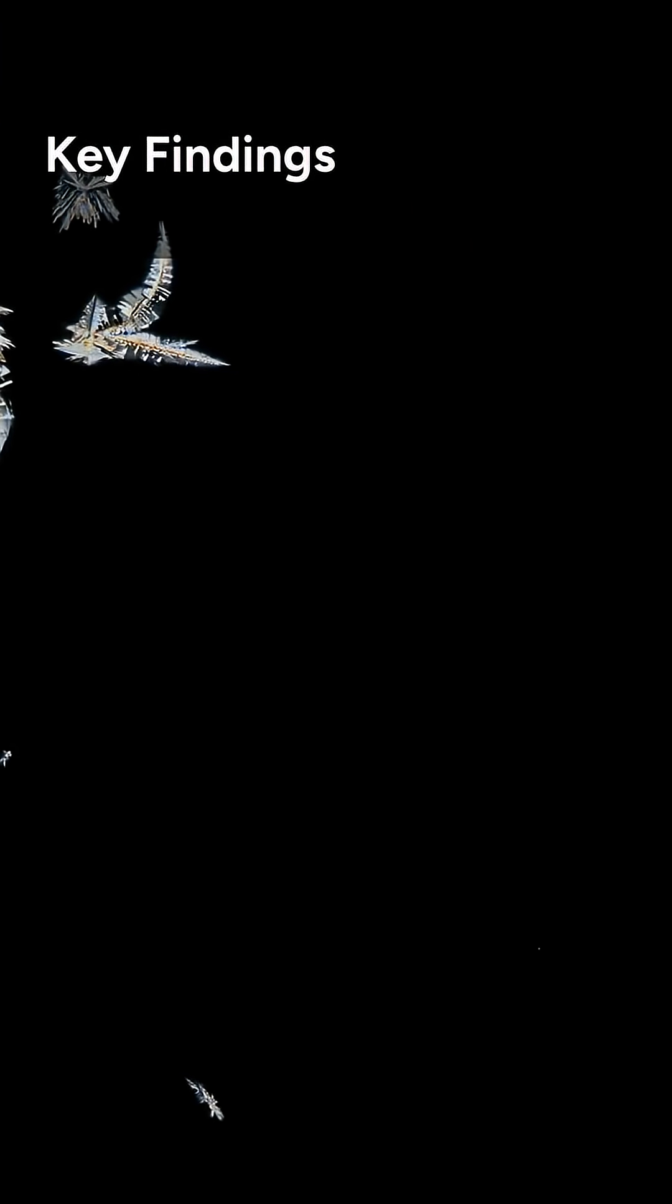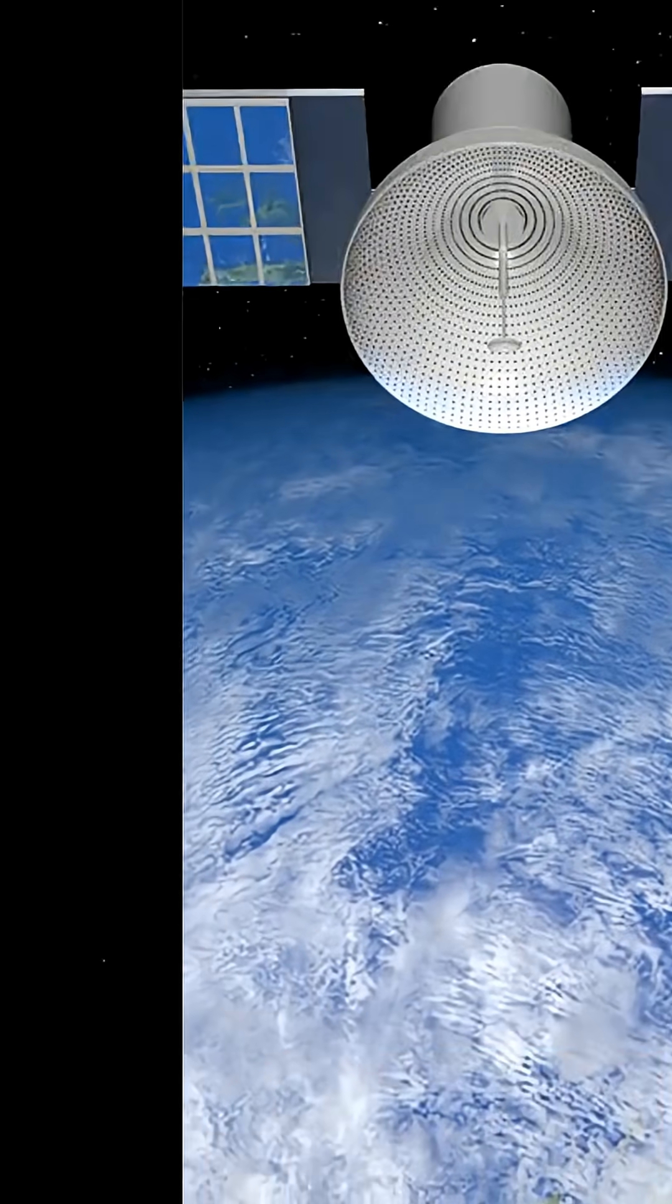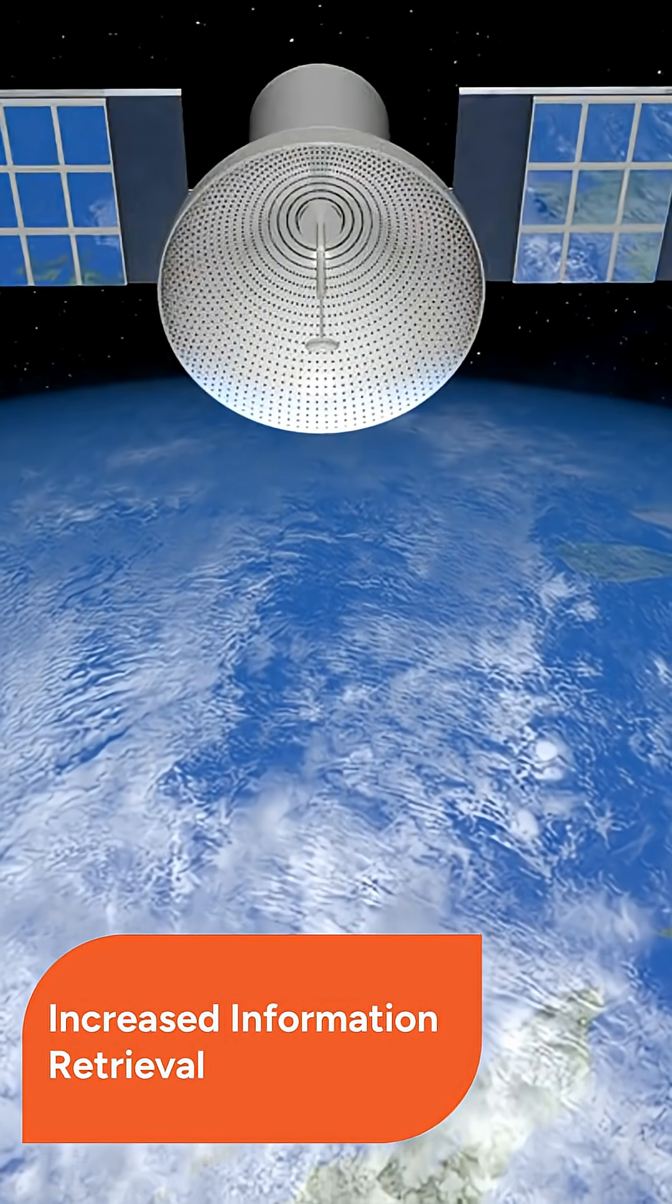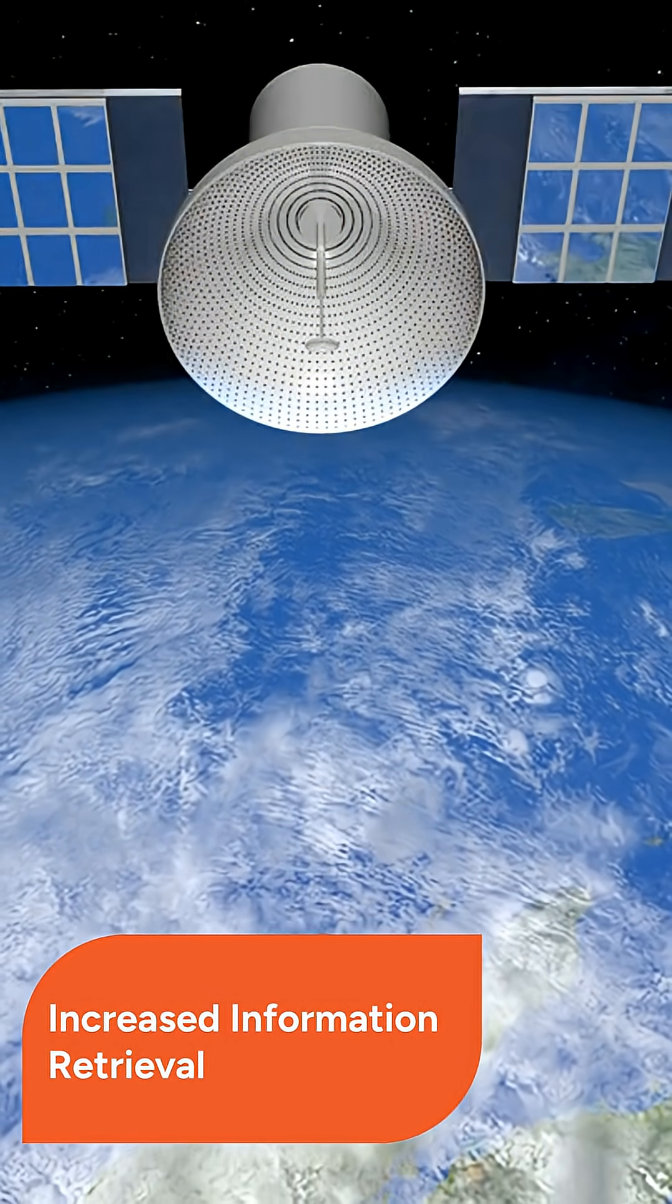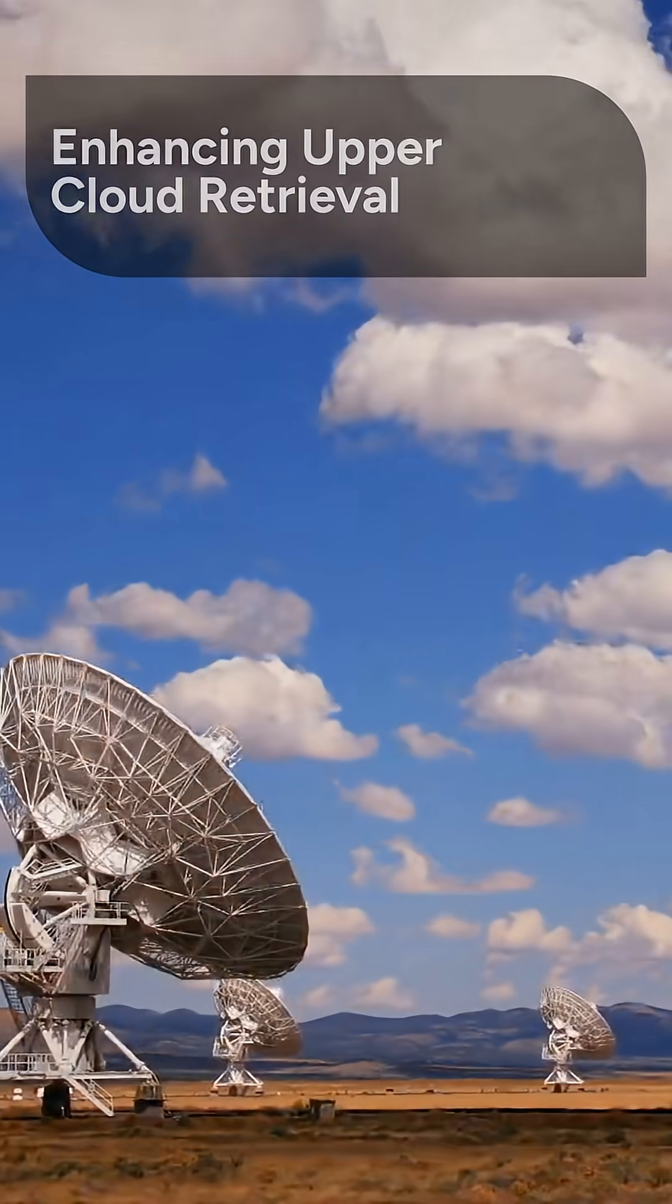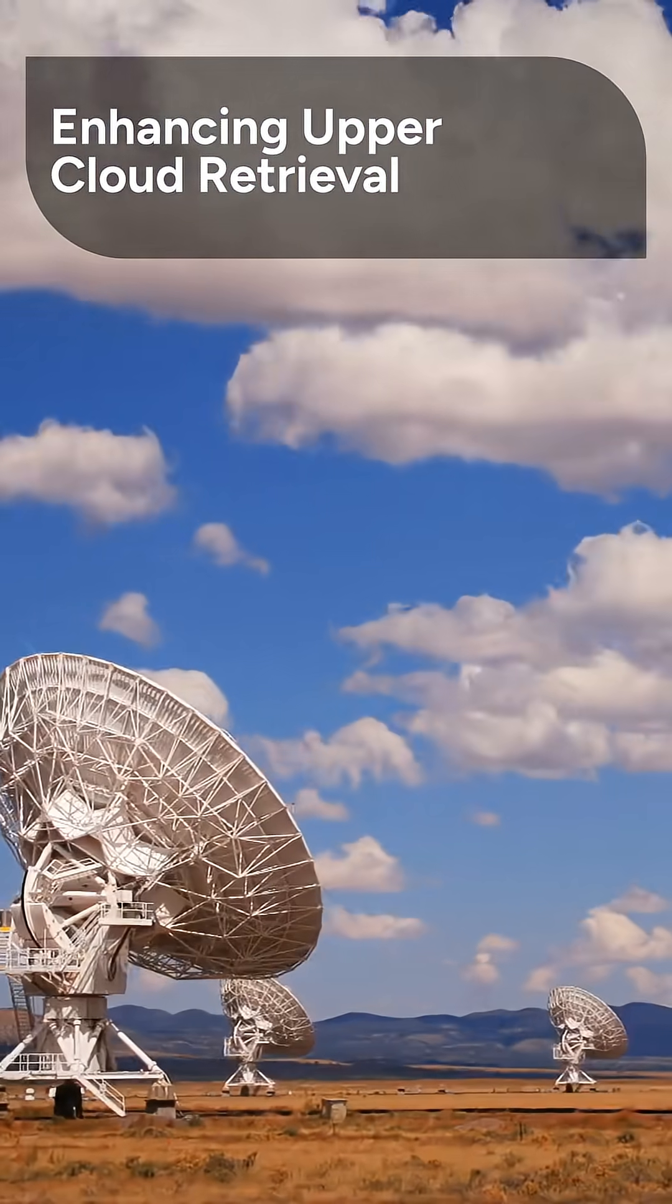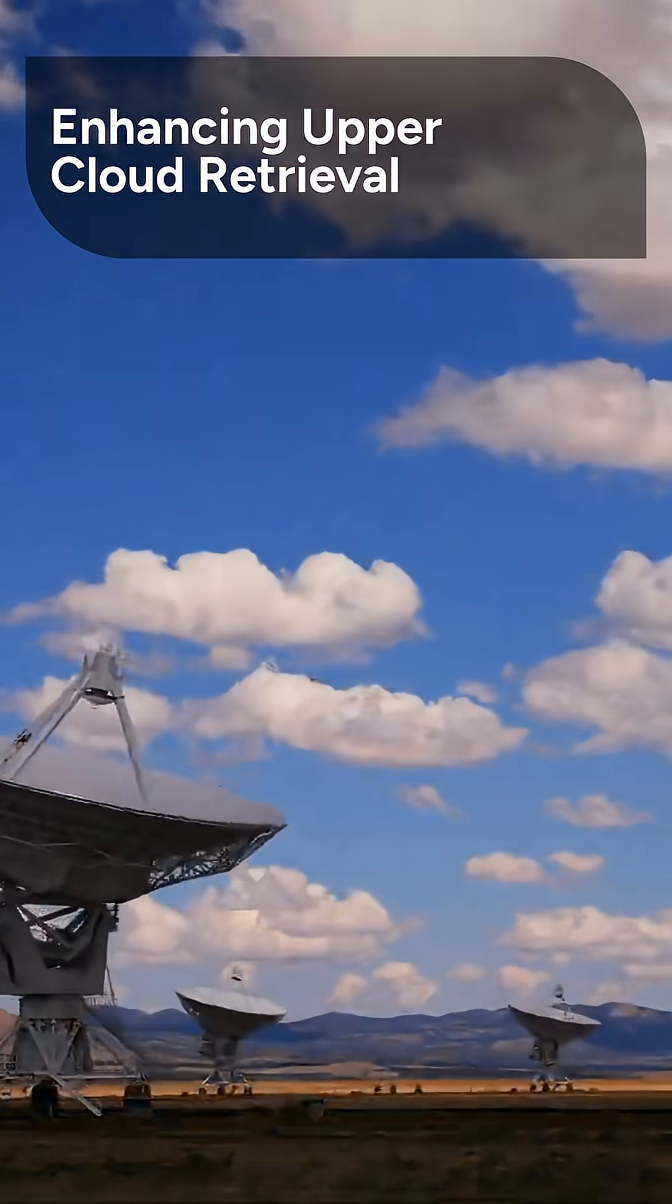The researchers utilized the degrees of freedom for signal index to quantify the information gained from different combinations of measurements. The team showed that combining intensity and polarization measurements significantly increases the amount of retrievable information. Adding near-infrared bands, such as those from the VennSpec H instrument, further enhances the retrieval of upper cloud parameters and the refractive index.